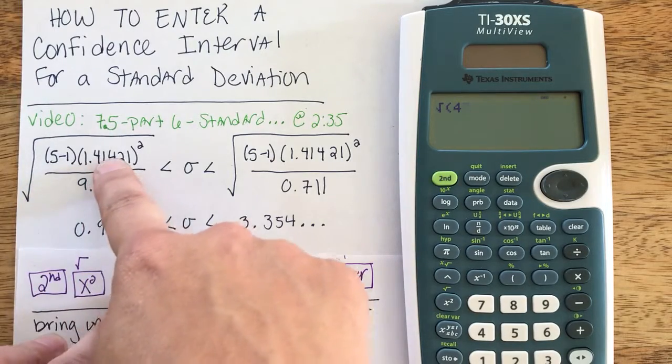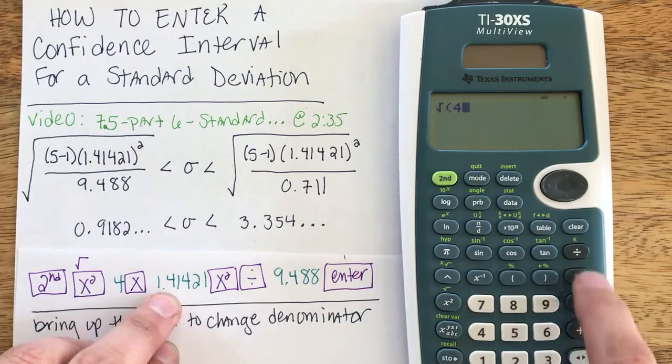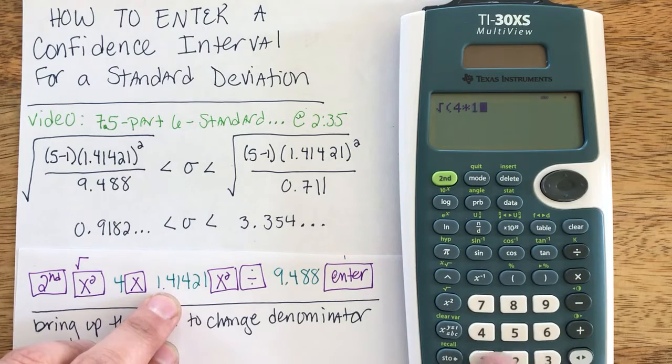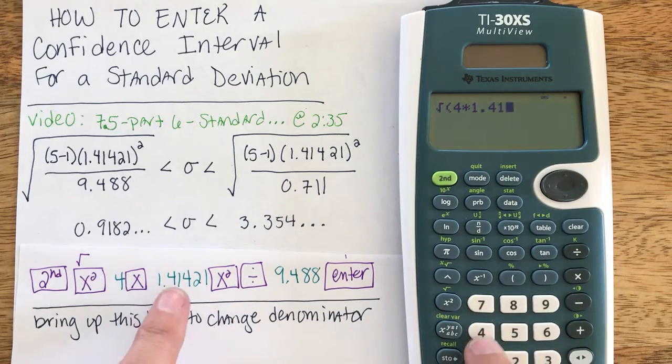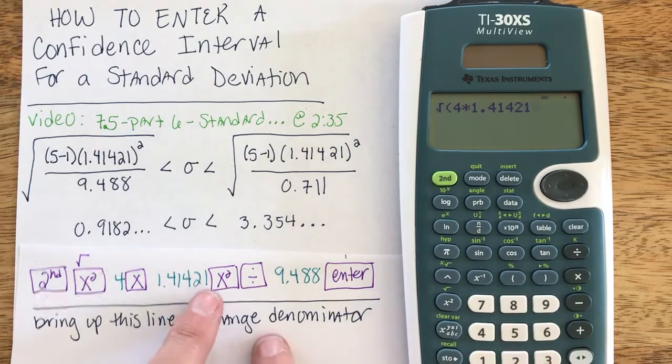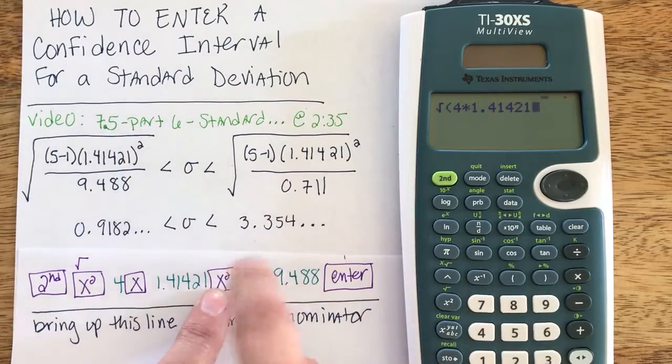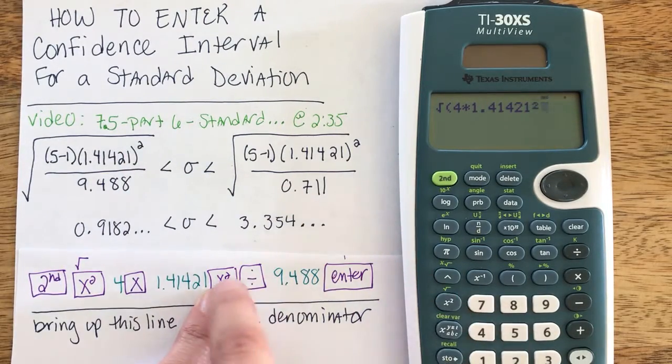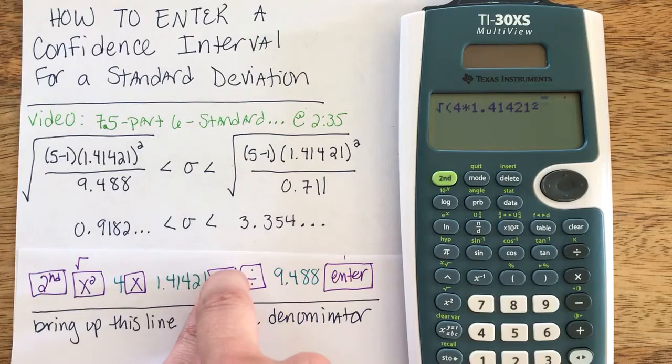Then I can just multiply 4 with s, my sample standard deviation. So 4 times 1.41421. Do not forget to square this. That is the most common mistake - people forget to actually square s, your sample standard deviation.